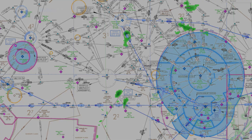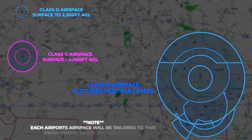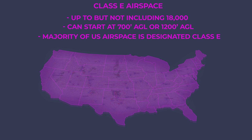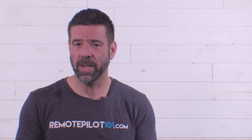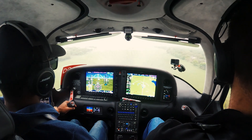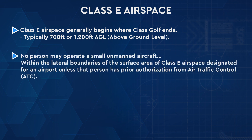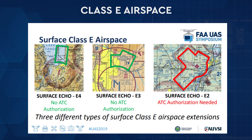Now controlled airspace would be Class Delta, Class Charlie, Class Bravo, and Class Echo airports. A large amount of our airspace over the United States is Class Echo airspace, and this is largely important to help with traffic separation and safe operations during IFR operations of manned aircraft. The base of Class E airspace typically starts at 700 feet AGL, and in some instances at 1,200 feet AGL. There can also be instances where Class E airspace starts at the surface, due to protecting instrument approaches at pilot-controlled or uncontrolled airfields.